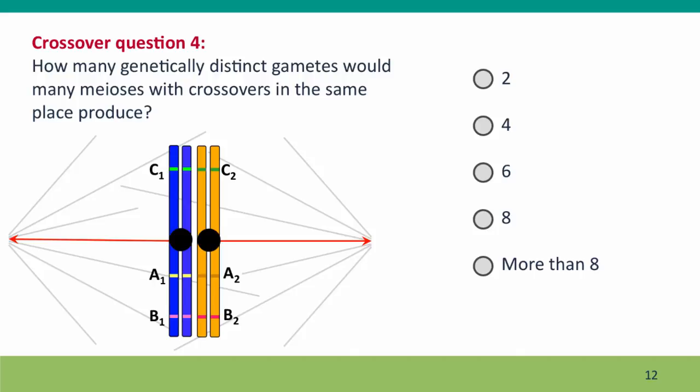Now, in the previous lecture where we were solving problems, it mattered whether we were considering a single meiosis or many meiosis. Does it matter here? And in the context of this question, no, it doesn't matter. We could have many meiosis. Because all four gametes are different and there are only four possibilities, we're going to get those four possibilities every time.